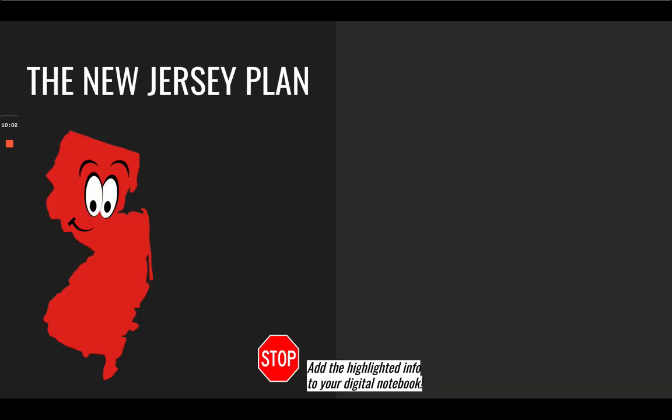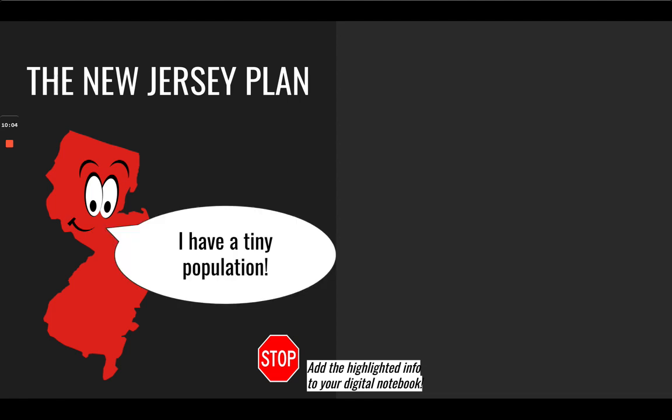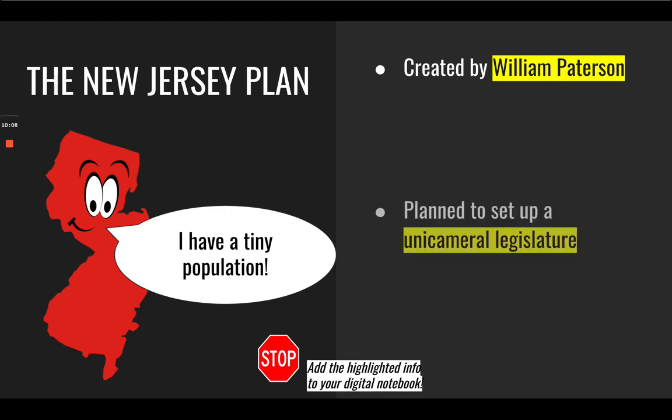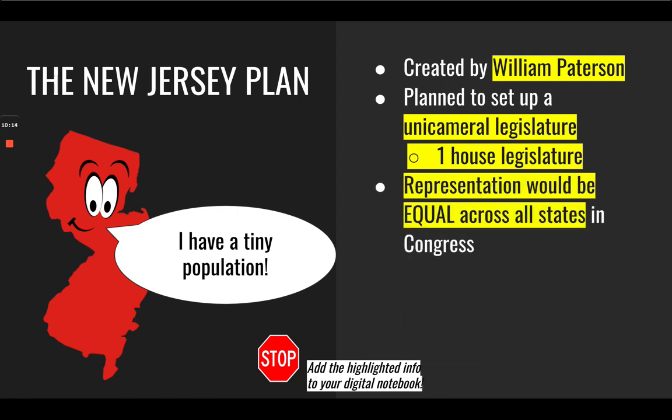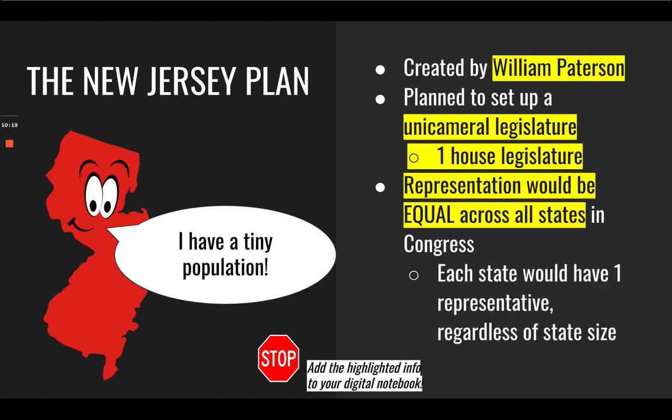The New Jersey Plan: created by William Patterson. This plan set up a unicameral, or one-house, legislature. Representation would be equal across all states in Congress — each state would have one representative, regardless of state size.